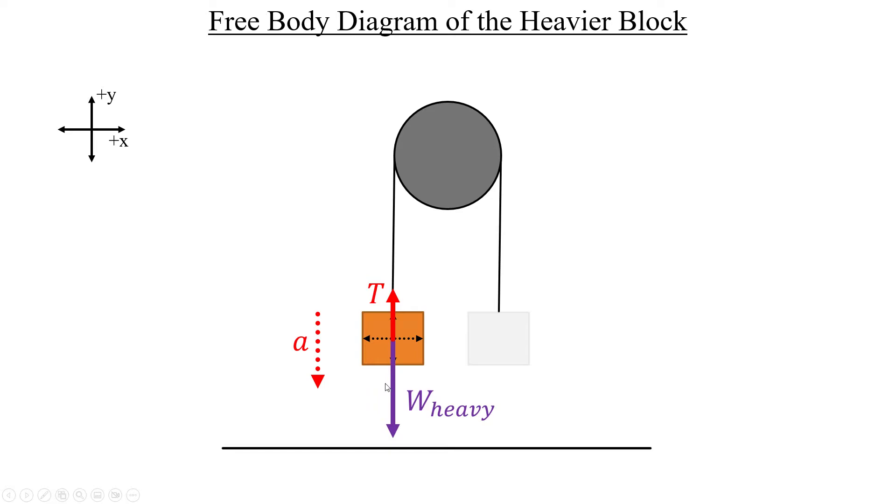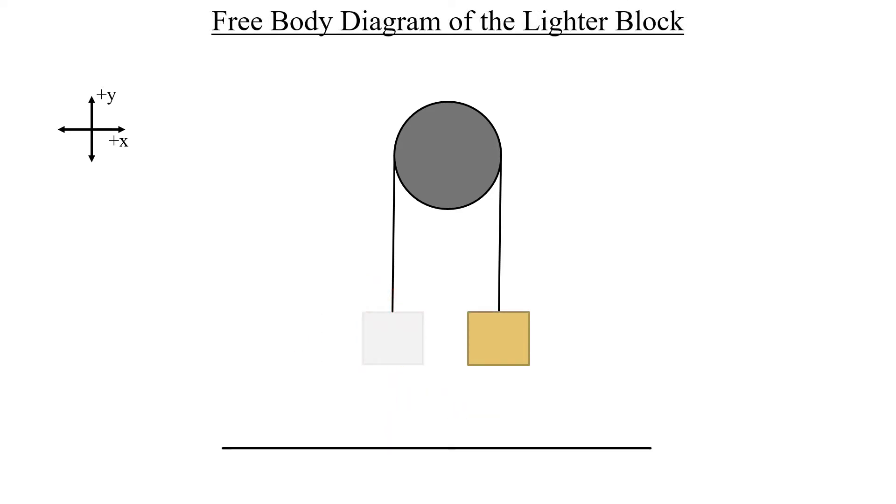For the lighter block, we have something of the opposite situation occurring. We start with the axes, nothing different there, but this time the weight of the lighter block is the shorter vector. And the tension is the longer one. And this is going to result in a positive acceleration for the lighter block, as we would expect based on the picture from the problem description. And with that included, that is everything accounted for.